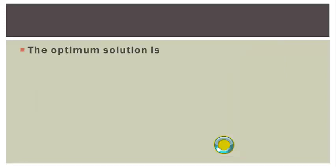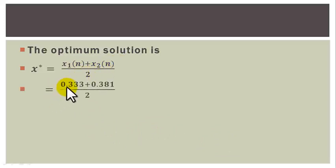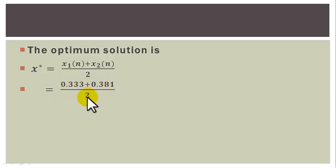The optimum solution is therefore X star equal to X1N plus X2N all over 2, which is equal to 0.333 plus 0.381 divided by 2, and this gives us 0.357.